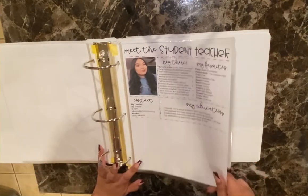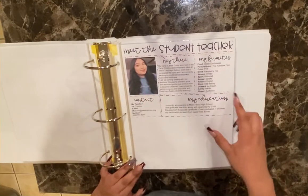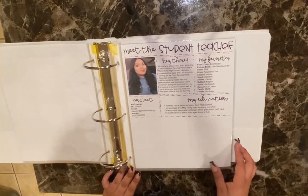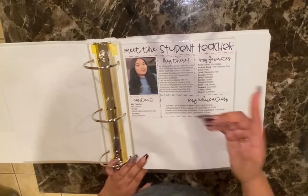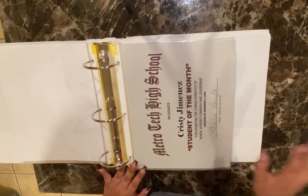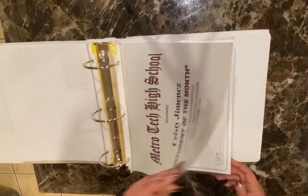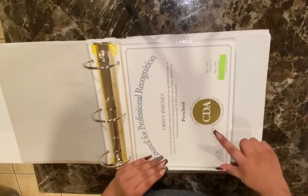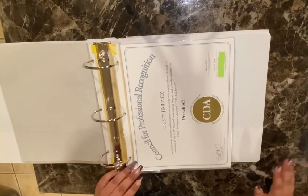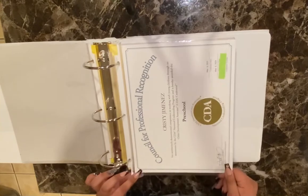Since I am a high school senior, I decided to include a 'meet the teacher' sheet for parents along with the family questionnaires. I also included any type of achievements like certificates and rewards — like the student of the month. This is the certificate you will receive once you've completed all the CDA requirements. I did the preschool edition, so this is the certificate I received.